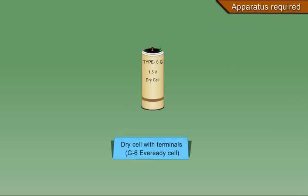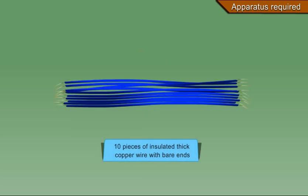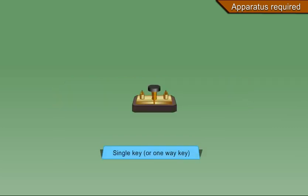Dry cell with terminals, G6 ever ready cell, 10 pieces of insulated thick copper wire with bare ends, single key or one way key.